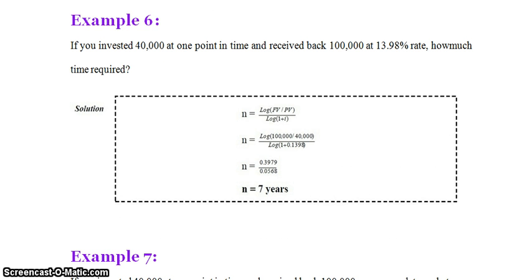Example: If you invested 40,000 at one point in time and received back 1 lakh at 13.98% rate, how much time is required? Since n is unknown: n = log(FV / PV) / log(1 + i) = log(1,00,000 / 40,000) / log(1 + 0.1398) = 0.3979 / 0.0568. Simplifying, n = 7 years. To calculate this, we need a scientific calculator with a log button.